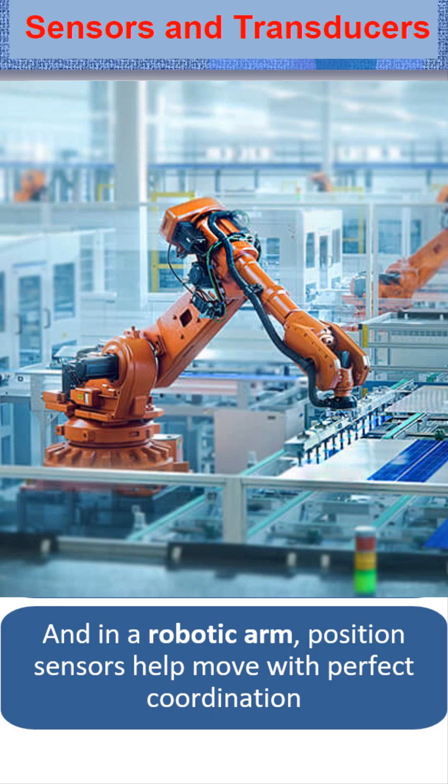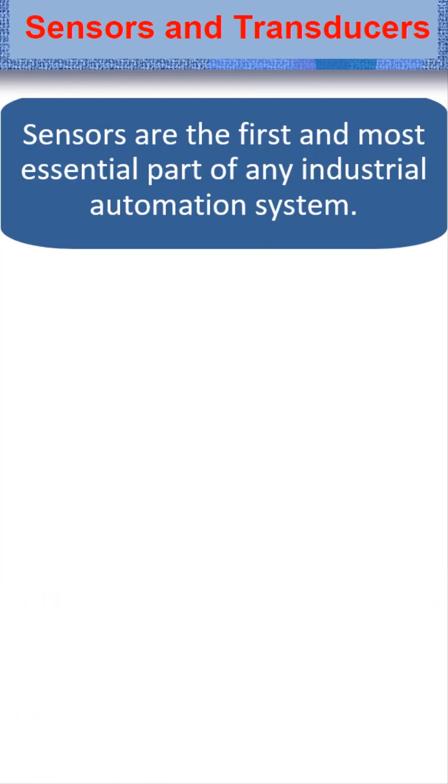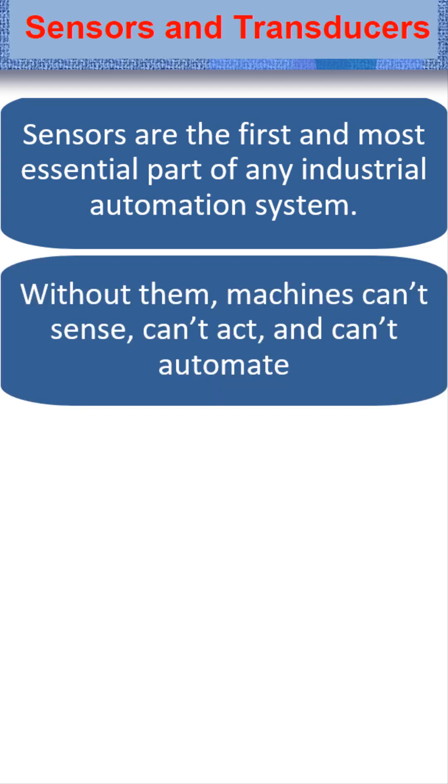In every case, sensors help machines make smart decisions automatically. Sensors are the first and most essential part of any industrial automation system. Without them, machines can't sense, can't act, and can't automate.